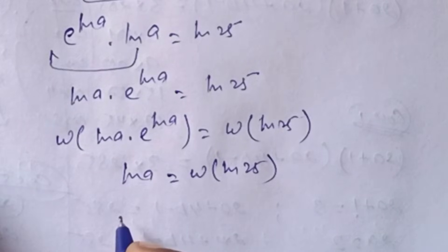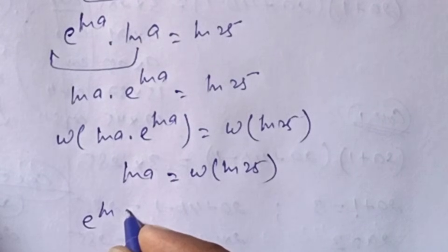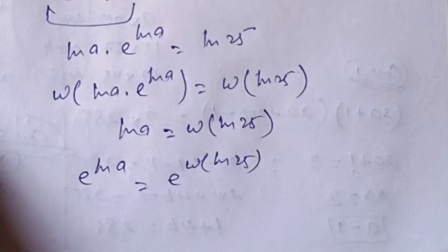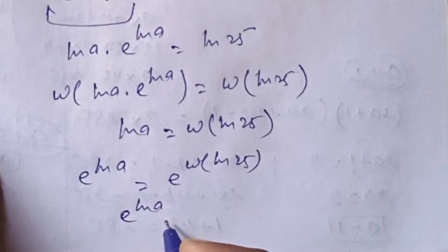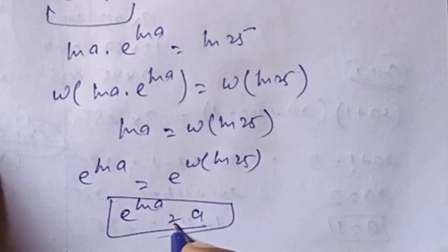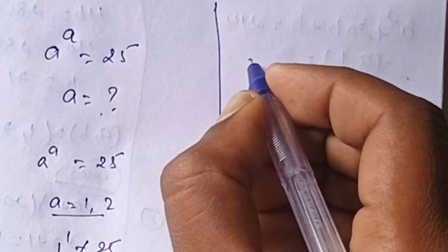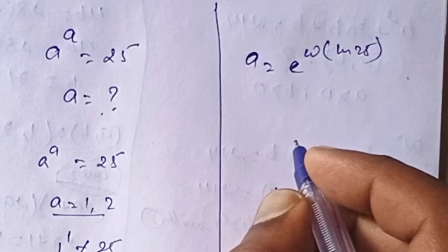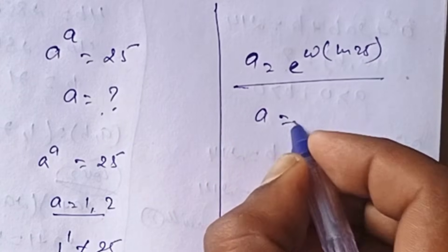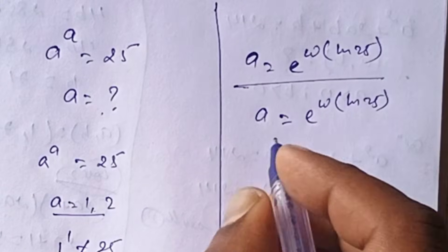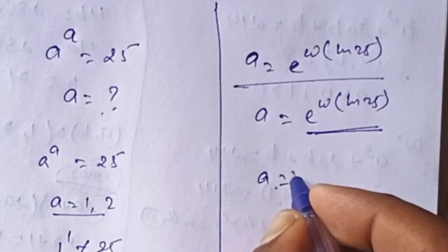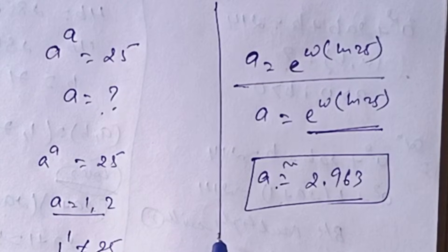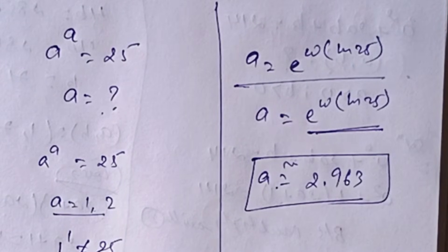In the next step: e^(ln a) = e^(W(ln 25)). Since e^(ln a) = a, therefore a = e^(W(ln 25)). The value of this is approximately a ≈ 2.963. This is the final value of this simplification. Thank you for watching my video. Please subscribe to my channel.